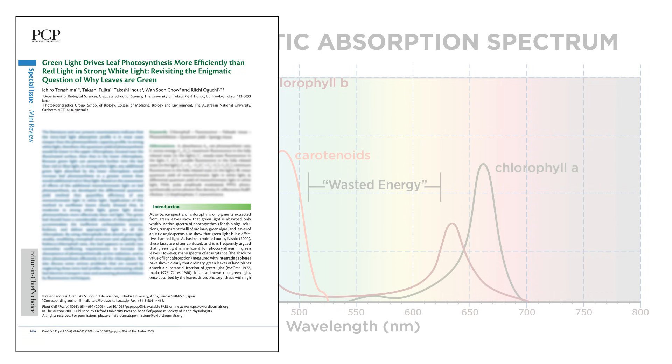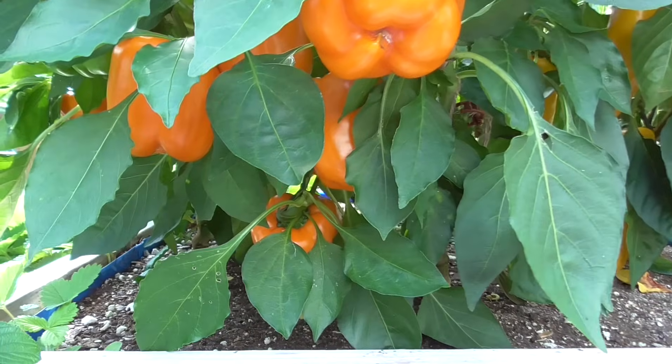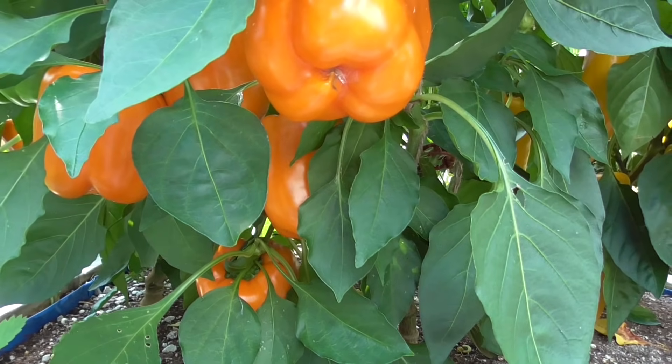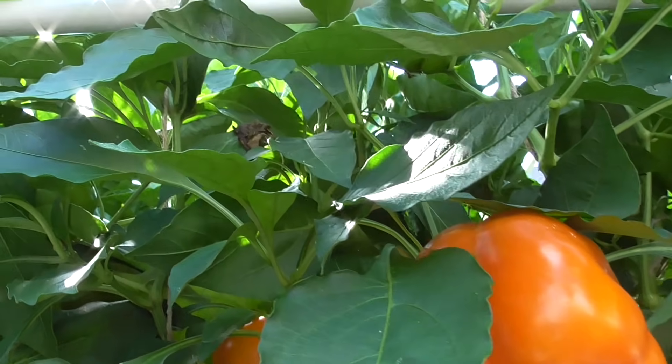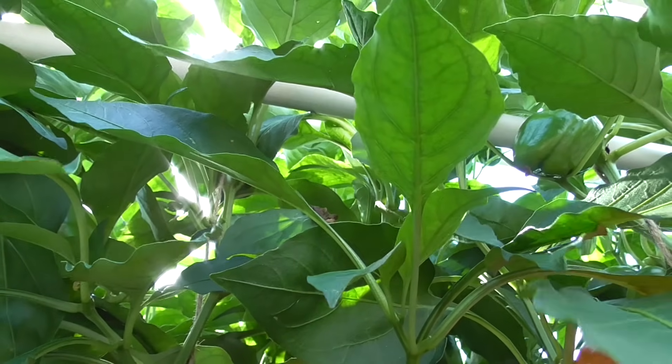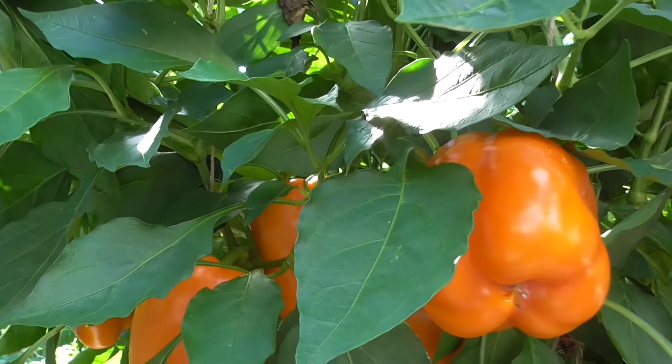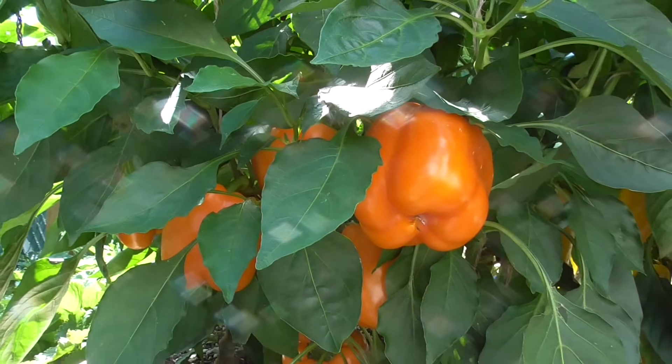But, how was this data gathered? This was based on testing of thin algal solutions. Higher plants, you know, the stuff that we're trying to grow, do not respond to and process light in the same fashion. They have much more complex structures. In reality, green leaves of land plants absorb a substantial fraction of green light. And this light then drives photosynthesis as well.